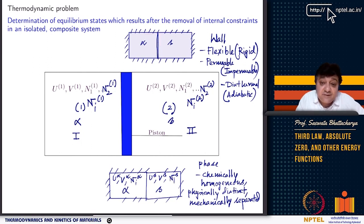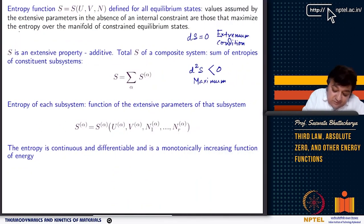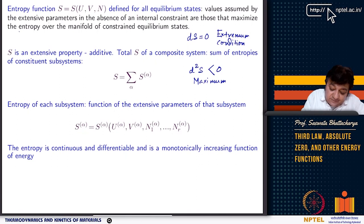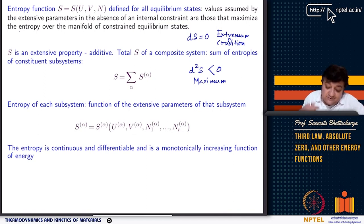The equilibrium states will be defined in terms of temperature, pressure, or in terms of extensive variables like u, v, n. Now comes the first postulate, where we define the entropy function, which is a function of extensive parameters u, v, and n. We tell that the entropy of each subsystem is a function of the extensive parameters of that subsystem, and entropy is an additive extensive property. The values assumed by these extensive parameters u, v, and n in the absence of any internal constraint are those that maximize the entropy.